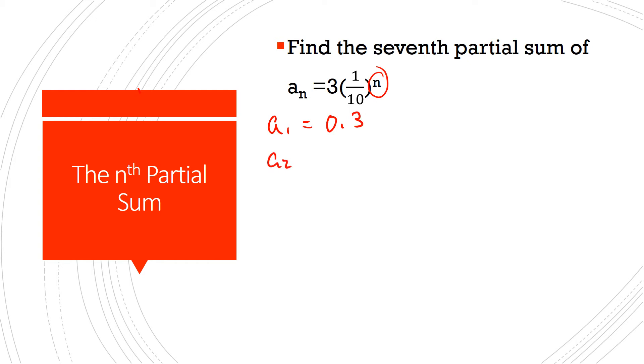Now, a2 is going to be 3 times (1/10) squared. (1/10) squared is 1/100. And 3 times 1 over 100 is going to be 3 over 100 or 0.03. How about a3? (1/10) cubed is going to be 1 one-thousandth, and 3 times that is going to be 0.003, or 3 thousandths, written in decimal form. Are you seeing a pattern that we're getting here?